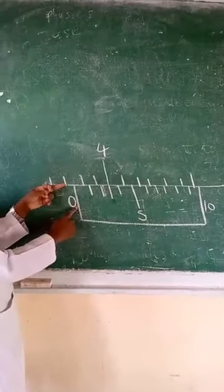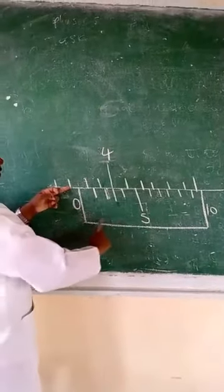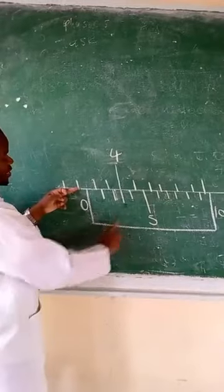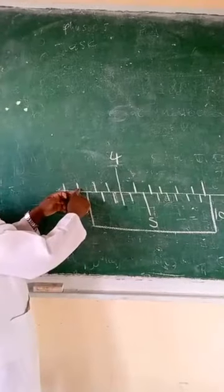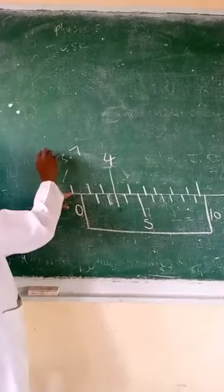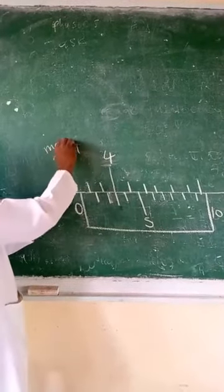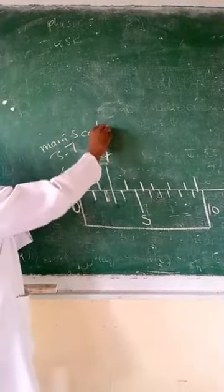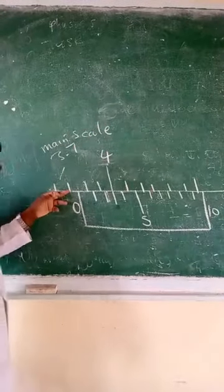So the point or the mark before the zero of the vernier scale is 3.7. So the reading here is 3.7, which is the reading of the main scale. Okay, so that's the first step.